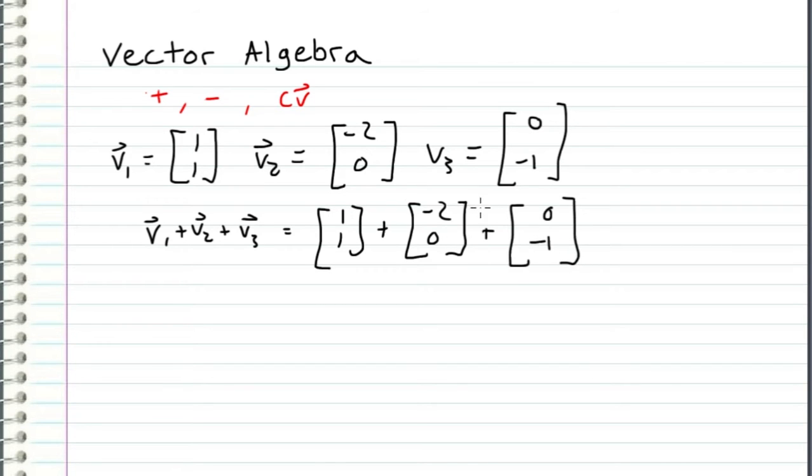So we sum up over the rows. So this will equal the vector [1 - 2 + 0] and then in the second row [1 + 0 - 1]. And by a simple evaluation, we can conclude that this vector is going to be equal to [-1, 0].